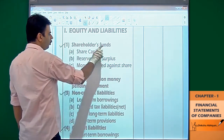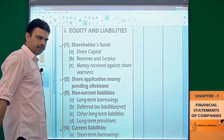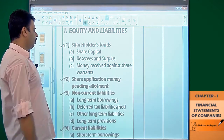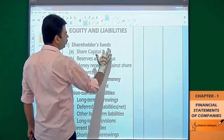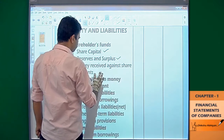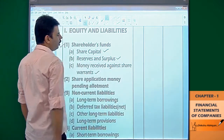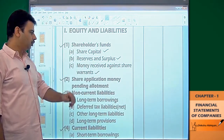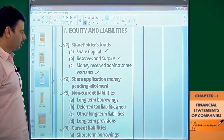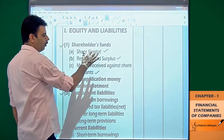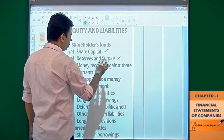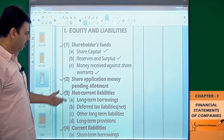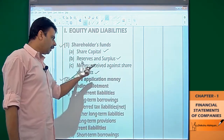Under shareholder funds, we have: share capital — the details of share capital will be explained later — number two reserves and surplus, and number three money received against share warrants. At the 12th class level, the third item is not required right now. So basically share capital, reserves and surplus, and money received against share warrants are the items that will appear.